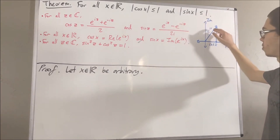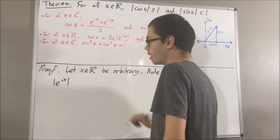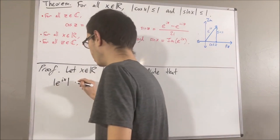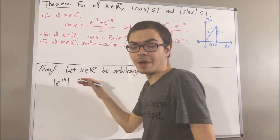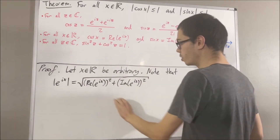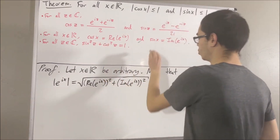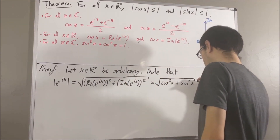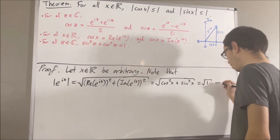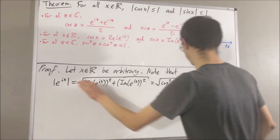So, let's first show that the absolute value of e to the ix is equal to 1. By definition of the absolute value of a complex number, this is just equal to the square root of its real part squared plus its imaginary part squared. We know that the real part of e to the ix is equal to cosine x, and the imaginary part of e to the ix is equal to sine x. But we know that sine squared plus cosine squared is equal to 1, so this is just the square root of 1, which is equal to 1. So, we have shown that the absolute value of e to the ix is equal to 1.